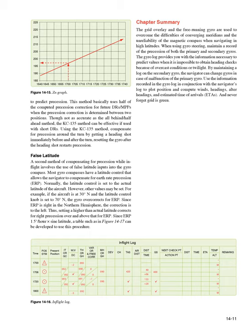Chapter Summary. The grid overlay and the free-running gyro are used to overcome the difficulties of converging meridians and the unreliability of the magnetic compass when navigating in high latitudes. When using gyro steering, maintain a record of the precession of both the primary and secondary gyros. The gyro log provides you with the information necessary to predict values when it is impossible to obtain heading checks because of overcast conditions or twilight. By maintaining a log on the secondary gyro, the navigator can change gyros in case of malfunction of the primary gyro. Use the information recorded in the gyro log in conjunction with the navigator's log to plot position and compute winds, headings, alter headings, and ETAs. And never forget — grid is green.